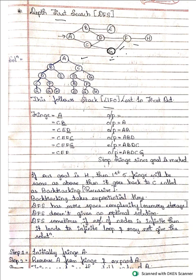Initially in the fringe we have the starting node A. We move A into the fringe. Whenever a node is getting expanded, copy that node separately in the output. A is getting expanded; the children of A are B and C. Push them in alphabetical order: first push C and then push B, because last in first out — the first one to be removed is B. B is getting expanded, so pop out B from the queue. B is not our goal node; G is our goal node.